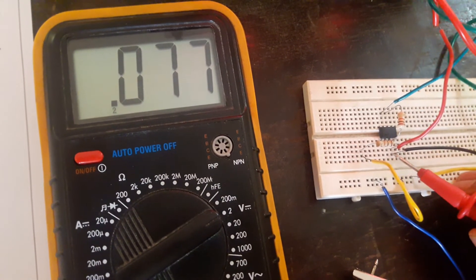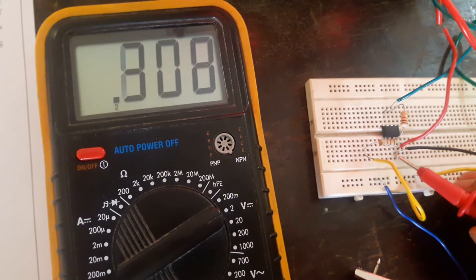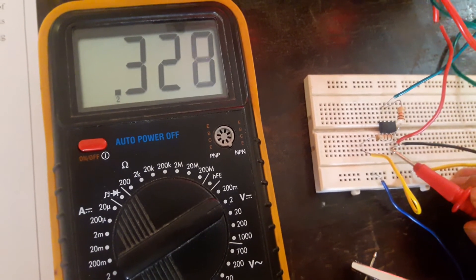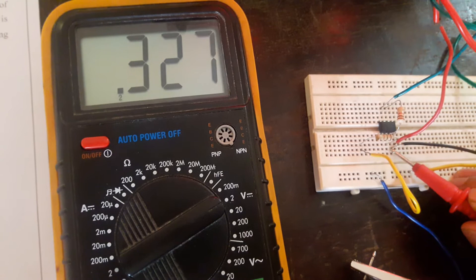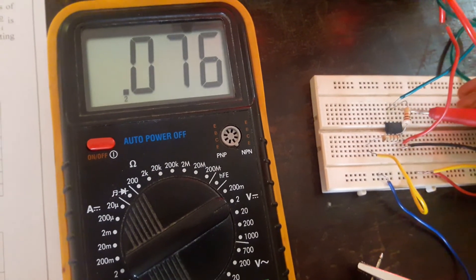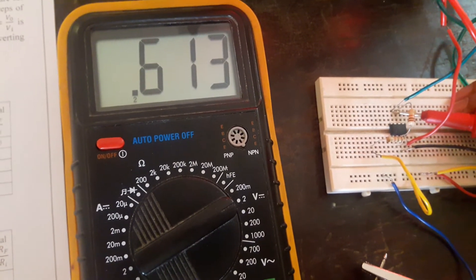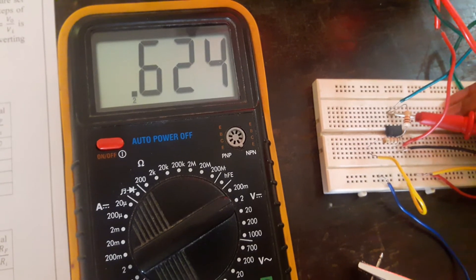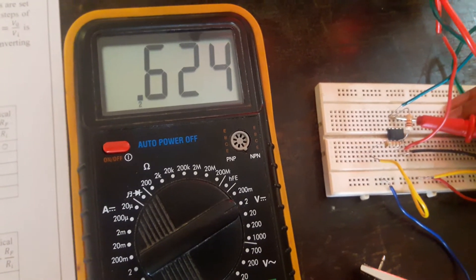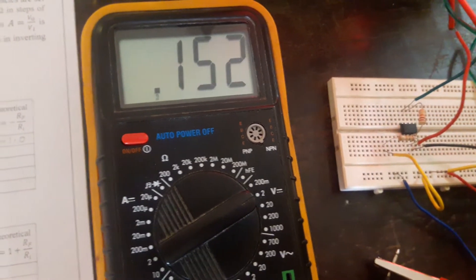I will measure the input at pin 3. If I take input it is coming around 0.327 and output as usual we have to measure at pin number 6. It is 0.624 we are getting. Now, I will tabulate the readings.